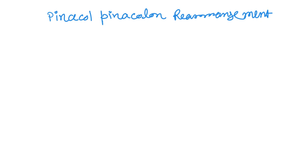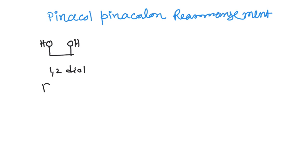Welcome to Chemistry Lover. Today in this video we are going to discuss the pinacol-pinacolon rearrangement. Before going into the discussion, we first need to know what is pinacol. Pinacol is the trivial name of 1,2-diol — this is 1,2-diol and it is known as pinacol.